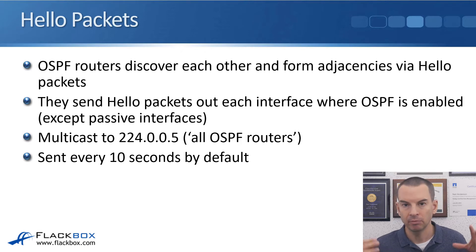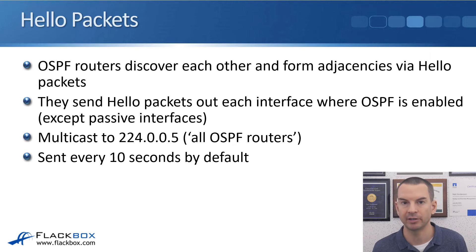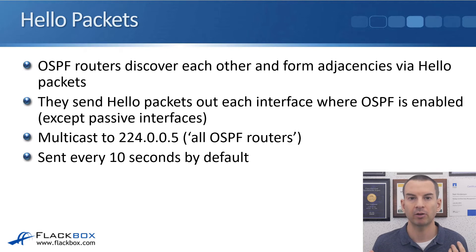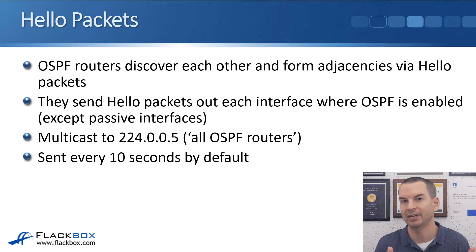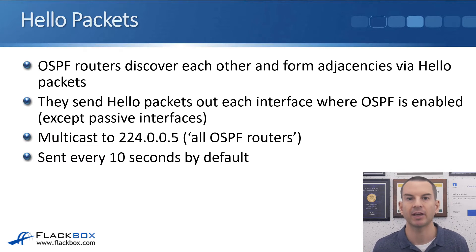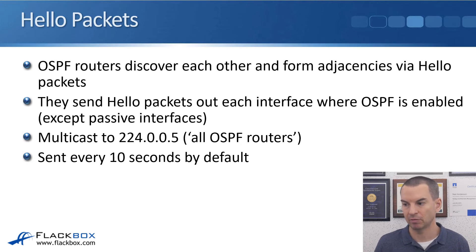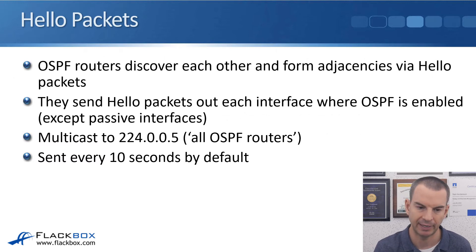Even after forming an adjacency, routers continue sending hello packets every 10 seconds, because as well as forming the adjacency, routers need to verify the neighbor is still up. If a router goes down, traffic can no longer be sent through it. The way a router finds out is by monitoring hello packets — if a neighbor stops sending hellos, the router realizes that neighbor has gone down.